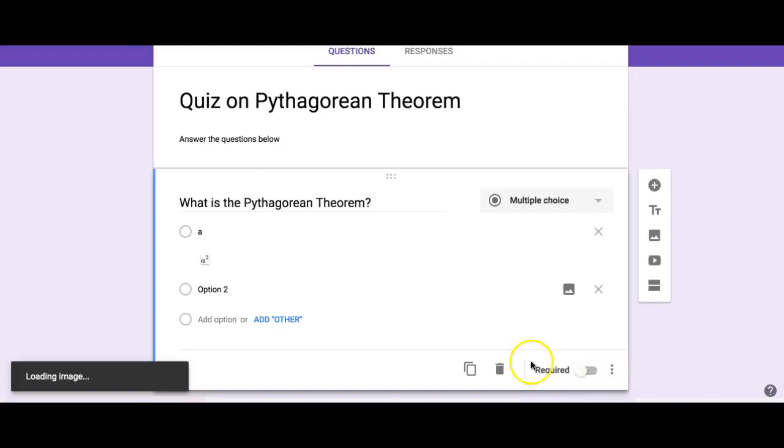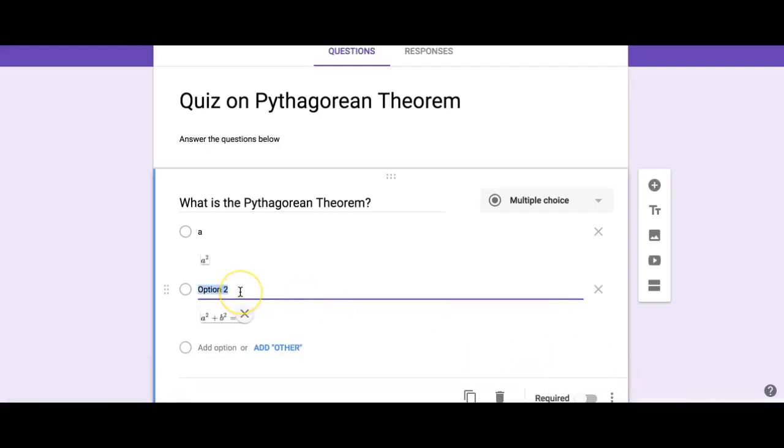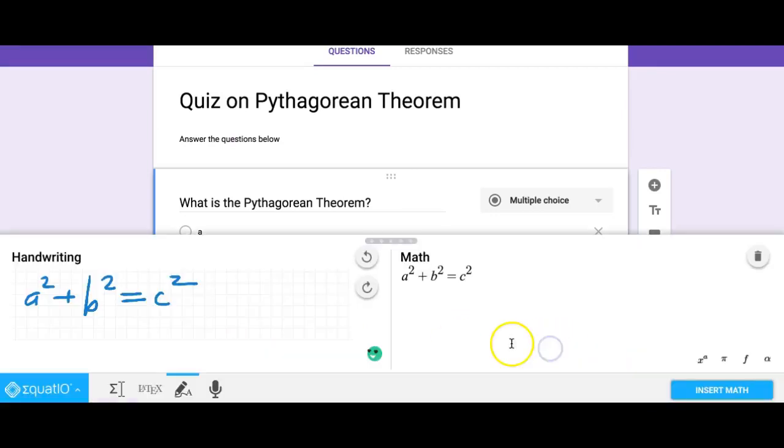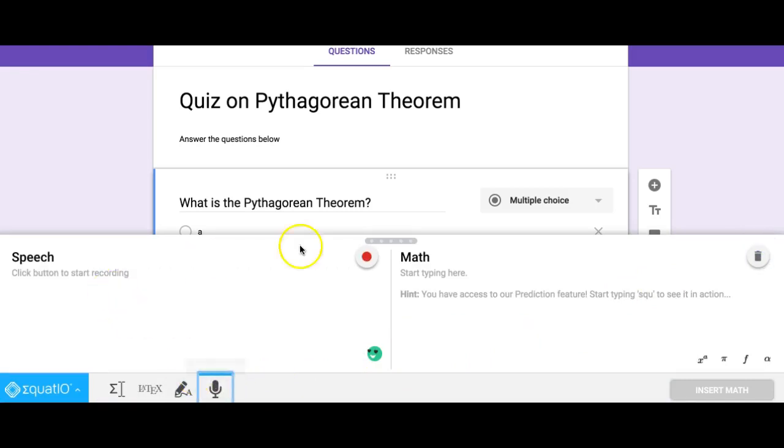It will make the math and put it into the form as my option B. The other option I've got is again insert math, and I can get rid of this and actually just do speech input. So if I click here and just say 'a squared plus b squared equals c squared,' then it comes up here and I can insert the math.